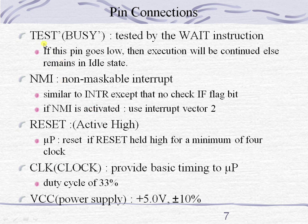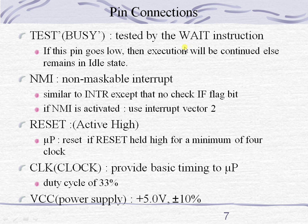The TEST bar pin is used along with the WAIT instruction. Whenever the WAIT instruction is executed, the processor will monitor this TEST bar pin continuously. If this TEST bar pin is 1, the processor remains in idle state. As long as this pin is high, the processor continues in idle state. As soon as this pin goes low, the processor will come out of the wait state and resume execution.